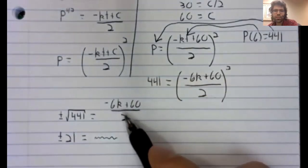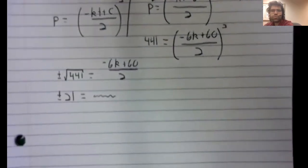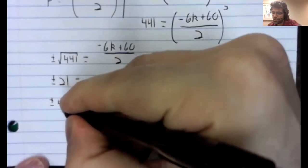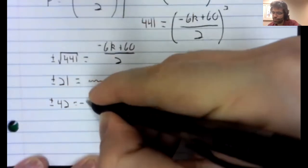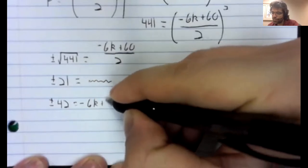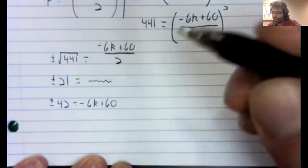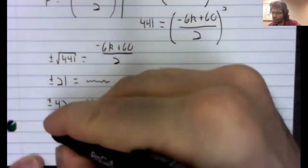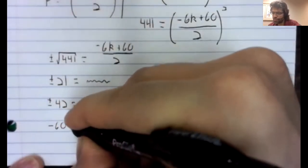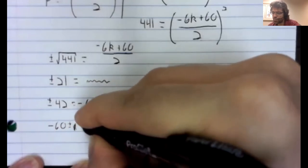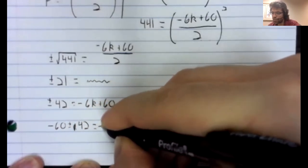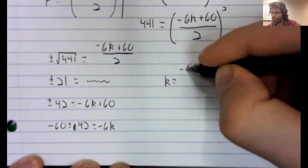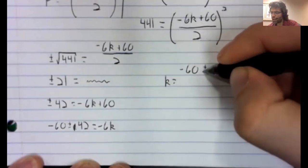Multiply both sides of this equality by two. Subtract 60 from both sides. And finally, we solve for k.